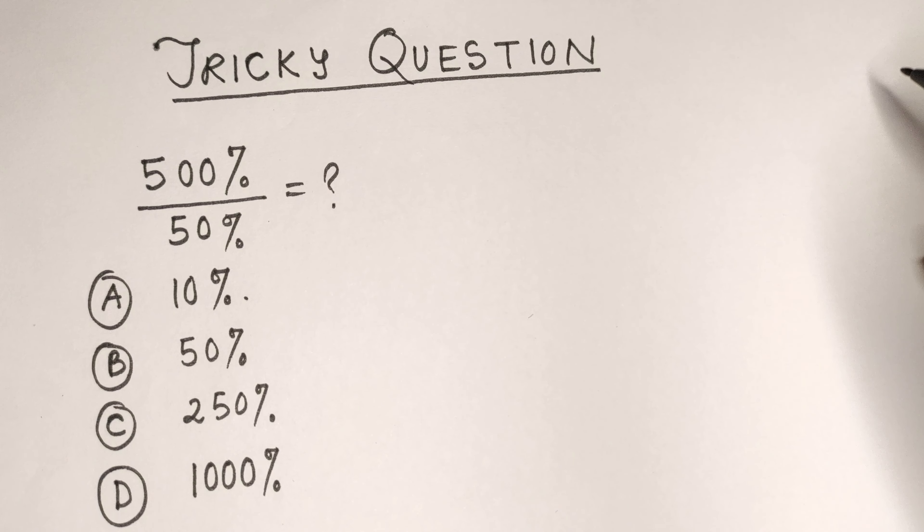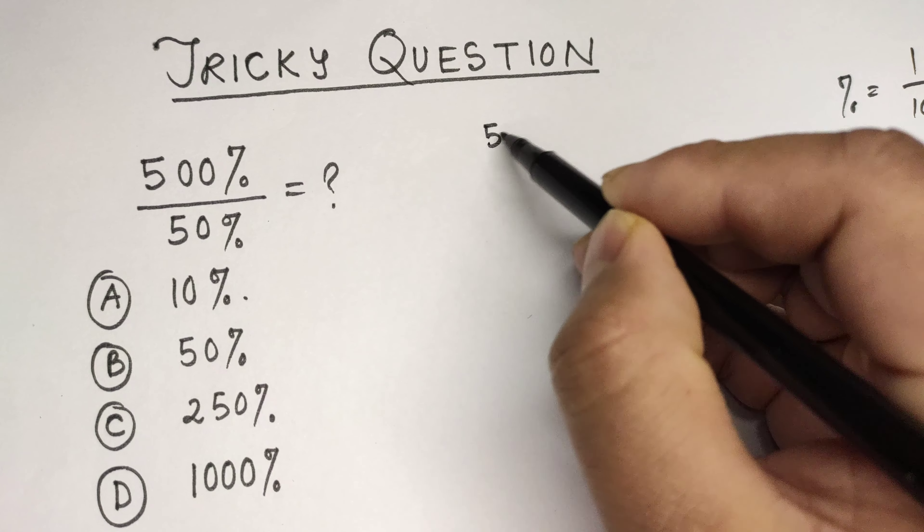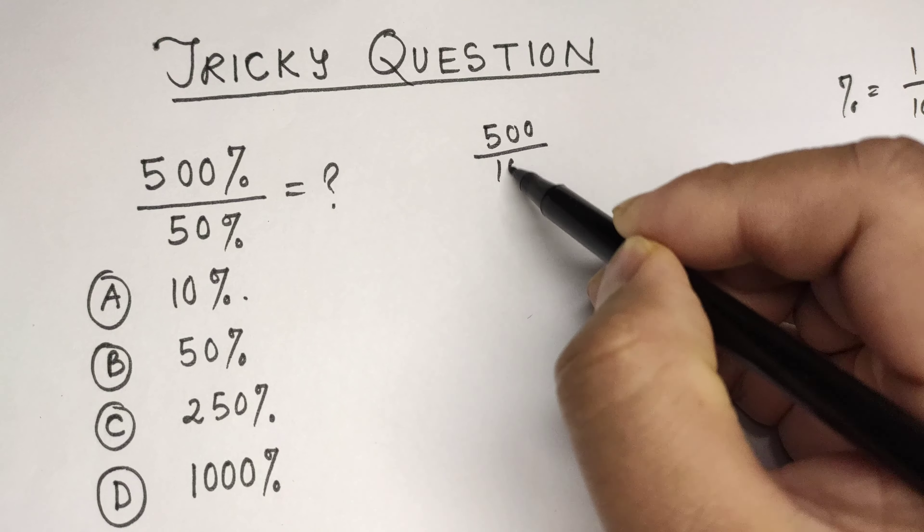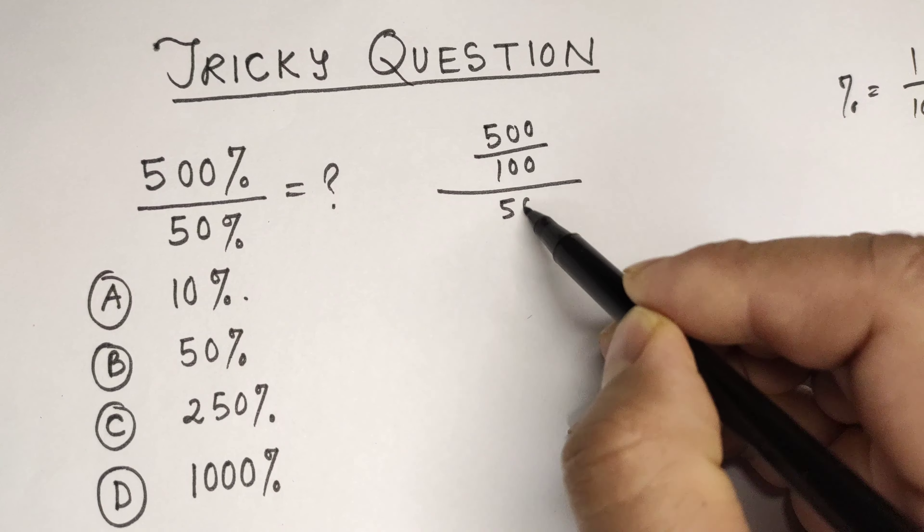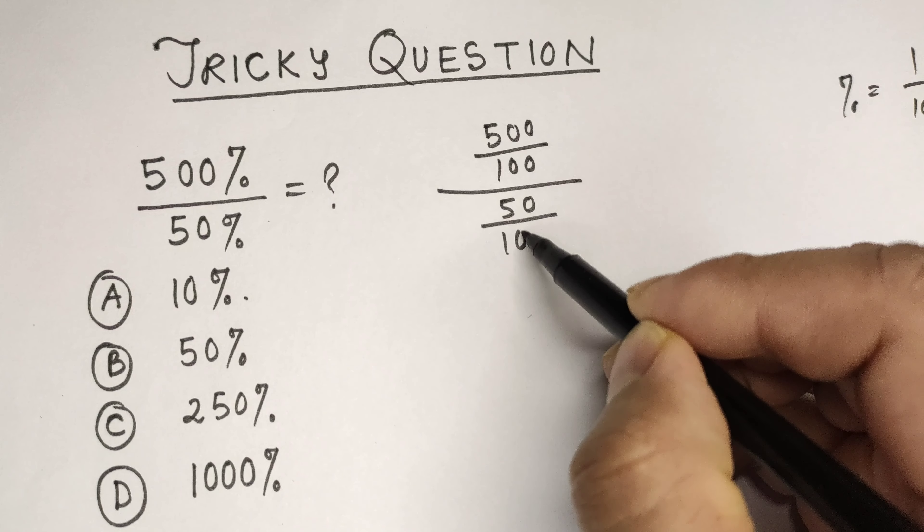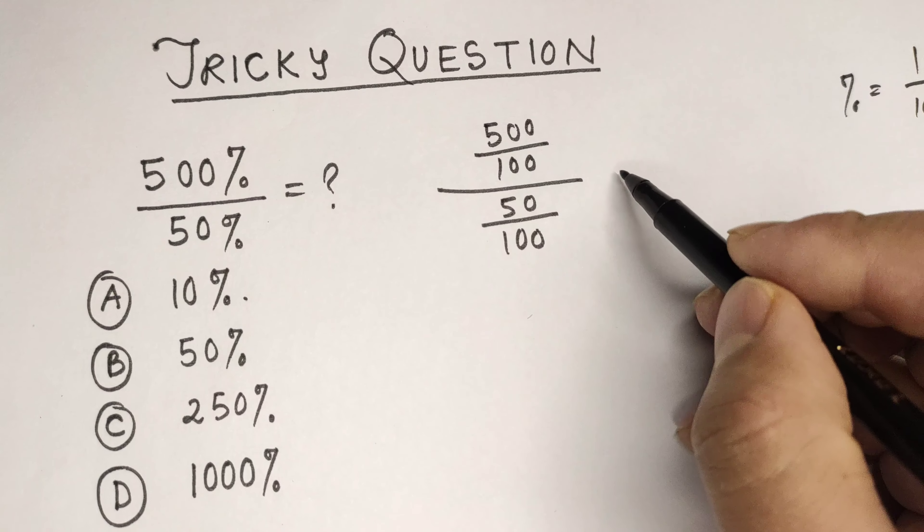We know that percentage equals 1 by 100. So 500 percent means 500 divided by 100, divided by 50 percent, which means 50 divided by 100. Here, the percentage is converted into decimal.